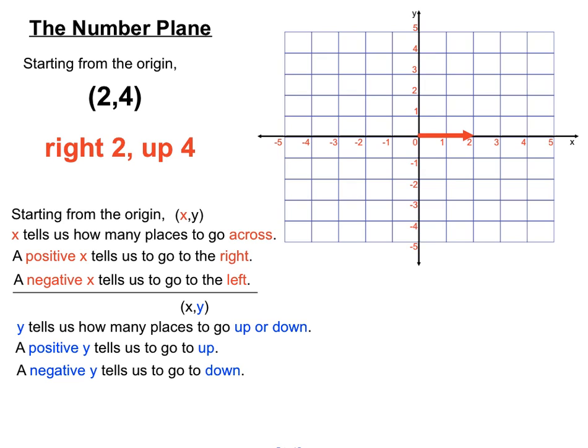And because the second digit, the y value in this case is a 4, we'll need to go up 4 from where we're up to. So first off we start off with the origin, right here. We go across 2 because it was a positive 2 in the x value there. And then we go from there, from where we're up to, up 4. And we'll put a blob, or a dot, and we'll label it the point 2, 4.